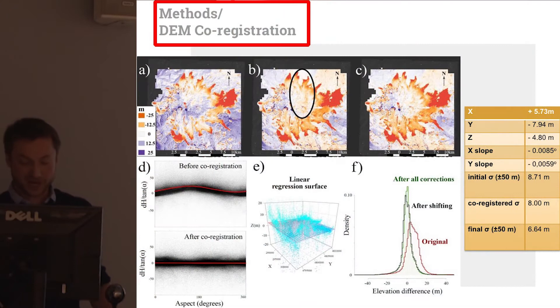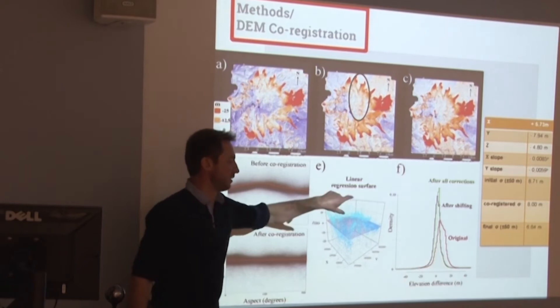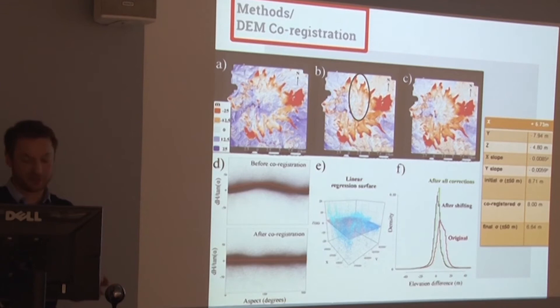You can see how those corrections actually reduced the standard deviation and increased the accuracy. The final standard deviation for non-glacier terrain was about 6.6 meters, but when we compared elevation differences for the nunataks, it went down to 3.5 meters — and that's our accuracy.